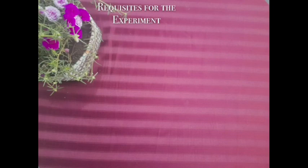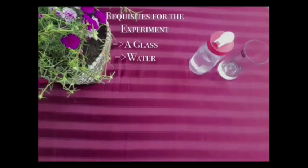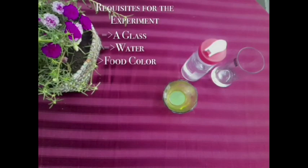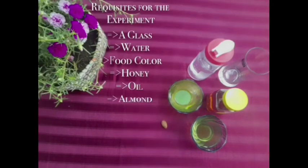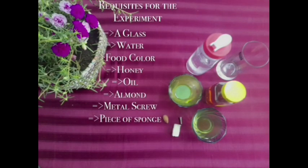Requisites for the experiment are: a glass, water, food colour, honey, oil, almond, metal screw, and a piece of sponge.